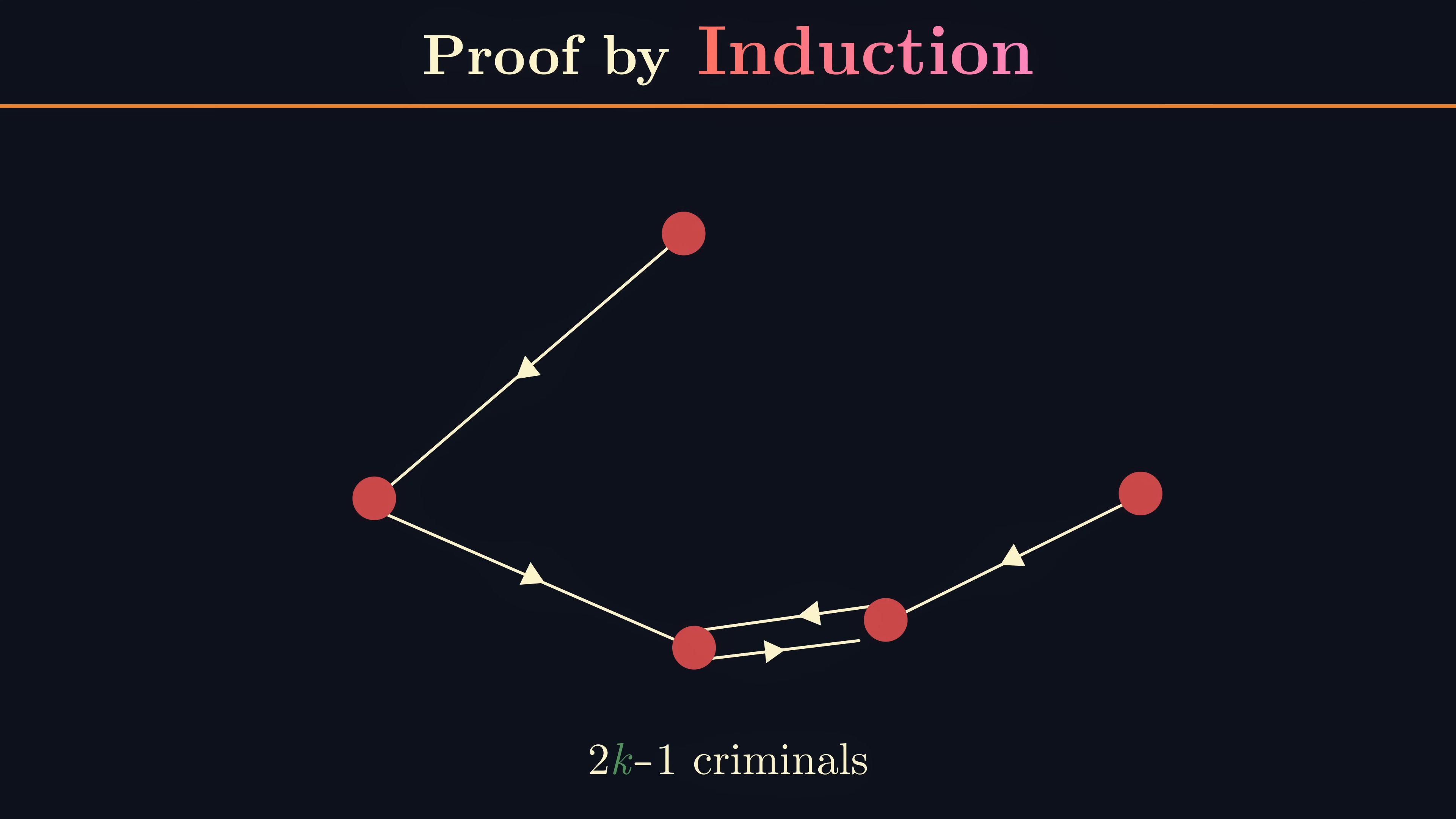For completeness of this video, let's go back and formalize our inductive proof. We already established when there is one criminal, trivially this criminal must be unwatched, and this acts as our base case. Now assume for some k that with 2k-1 criminals there exists some unwatched criminal x.